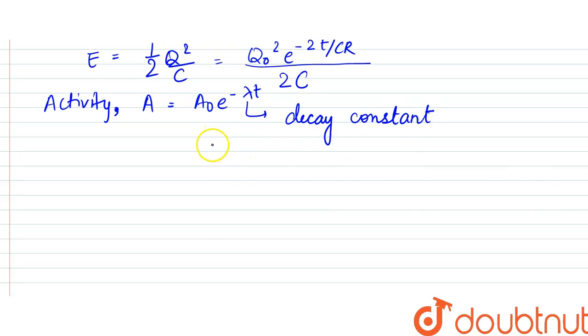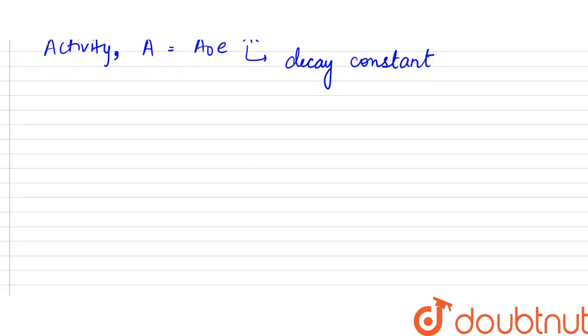Now the ratio of these two, that is the energy by the activity, would be equal to Q₀²e^(-2t/CR) whole divided by A₀e^(-λt).